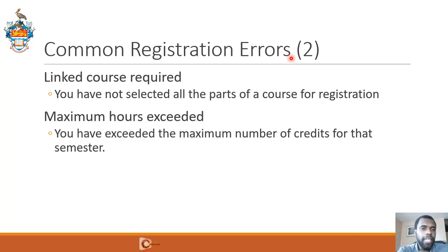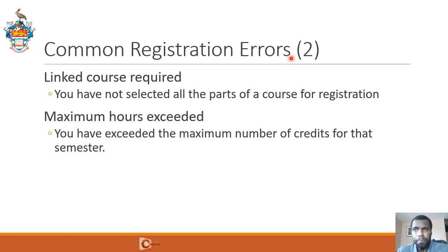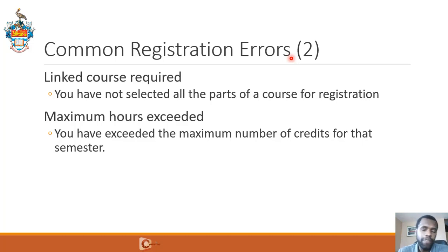A maximum hours exceeded error will indicate that you have exceeded the maximum number of credits for that semester. If you are a full-time student, you can take a minimum of 15 credits plus a foundation and a maximum of 18 credits plus a foundation course. If you're part-time, the rules are a little bit different.